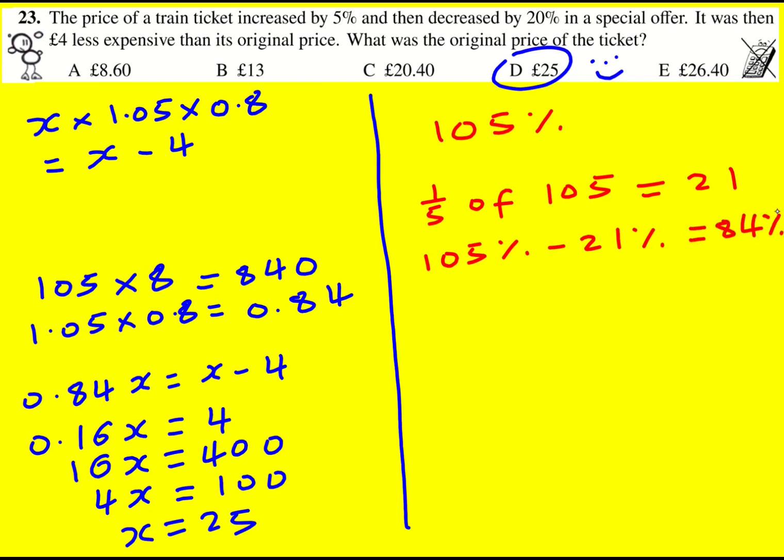So I'm going to have my 105% and I'm going to actually minus 21% from it to give me 84%. You can see the similarities. I've not used multipliers, but I've got actually 0.84. So then I've got 84% and that is £4 less expensive than the original price, which means that 16% is going to have to be 4 because the original price was 100%. So the difference is 16% and the difference here is £4.